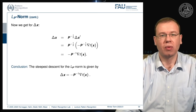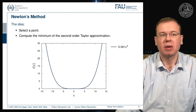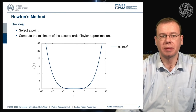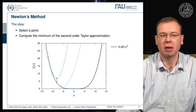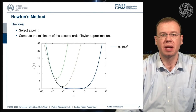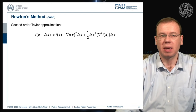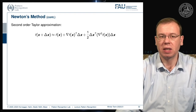Now let's look at one more important method: Newton's method. The idea is to select a point, compute the minimum of the second-order Taylor approximation, take that point, compute the second-order Taylor approximation again, and iterate until the actual minimum is found. The second-order Taylor approximation is f(x) + ∇f(x)^T Δx + (1/2) Δx^T H Δx, where H is the Hessian matrix.